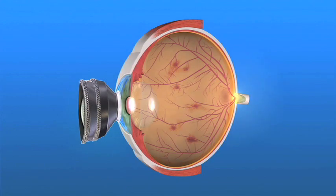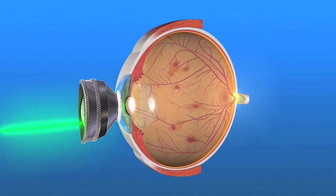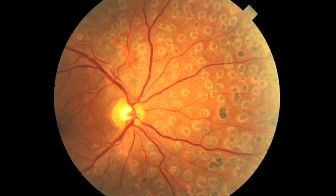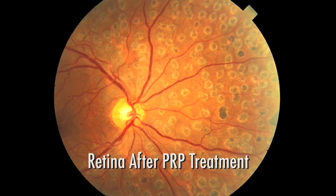The laser is applied to the peripheral retina, avoiding the central macula. This causes the blood vessels to shrink and often prevents them from growing again in the future. It also decreases the chances of the blood vessels bleeding into the vitreous or causing a retinal detachment. In some cases, multiple laser treatments may be necessary.